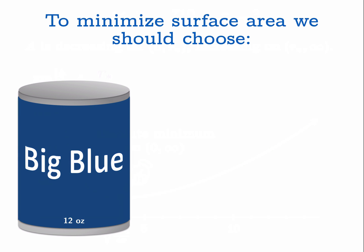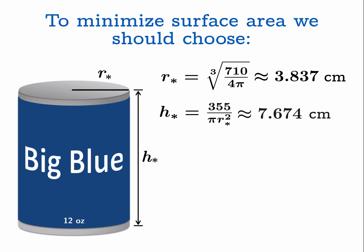So to minimize the surface area, we should choose the radius to be this quantity, which is about 3.837 cm, and then the height can be determined in terms of r star, and it would be about 7.674 cm.